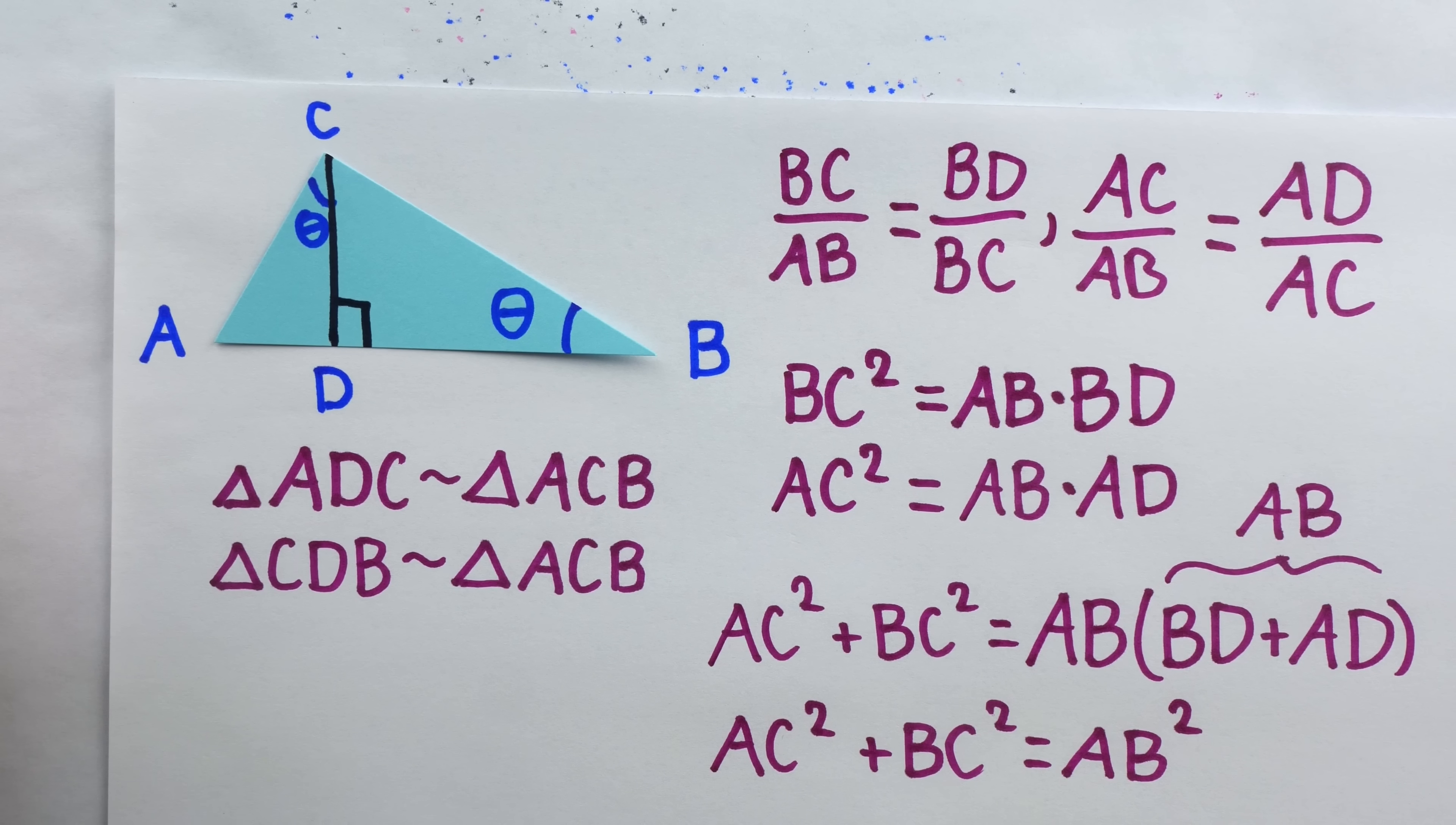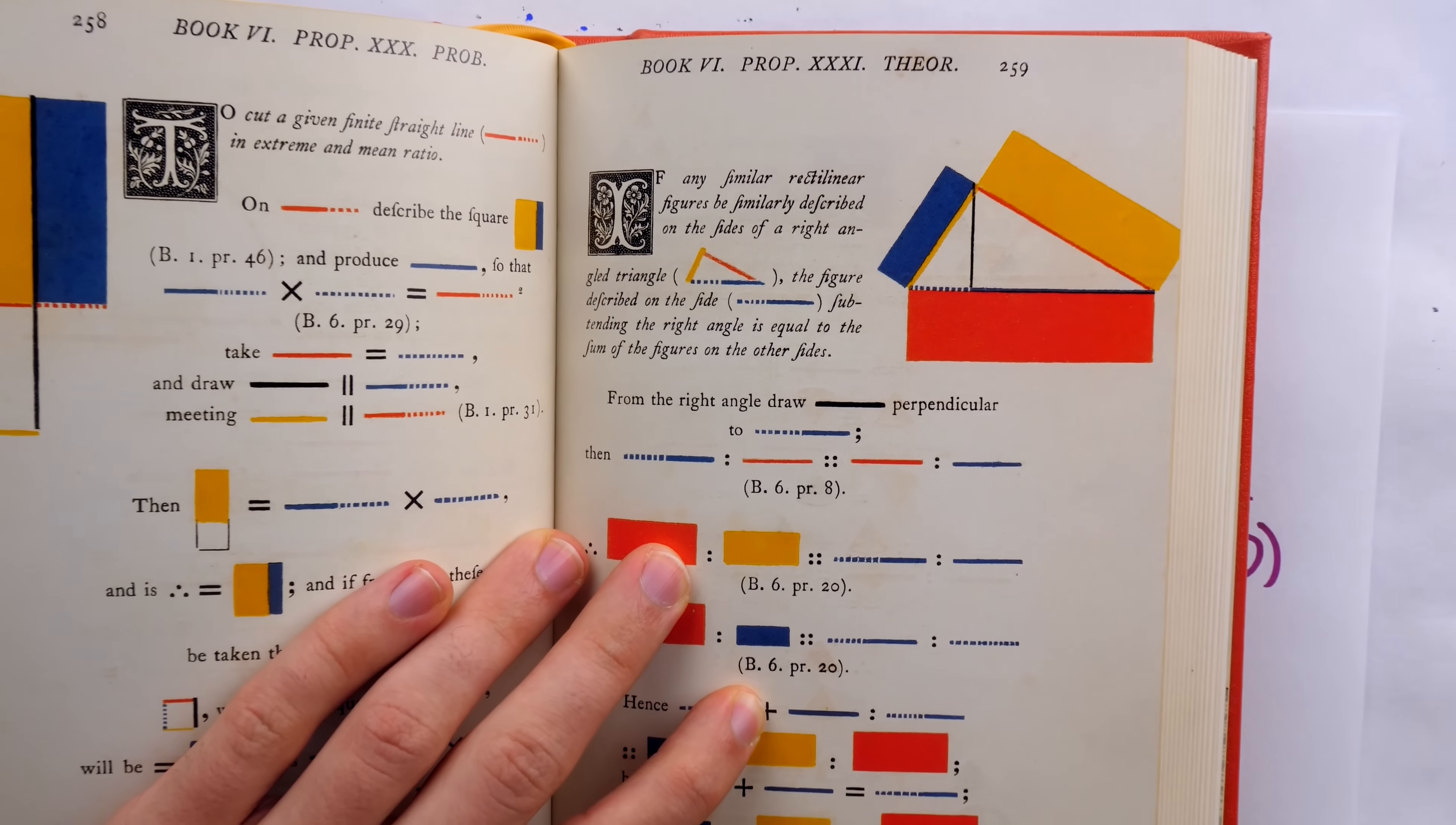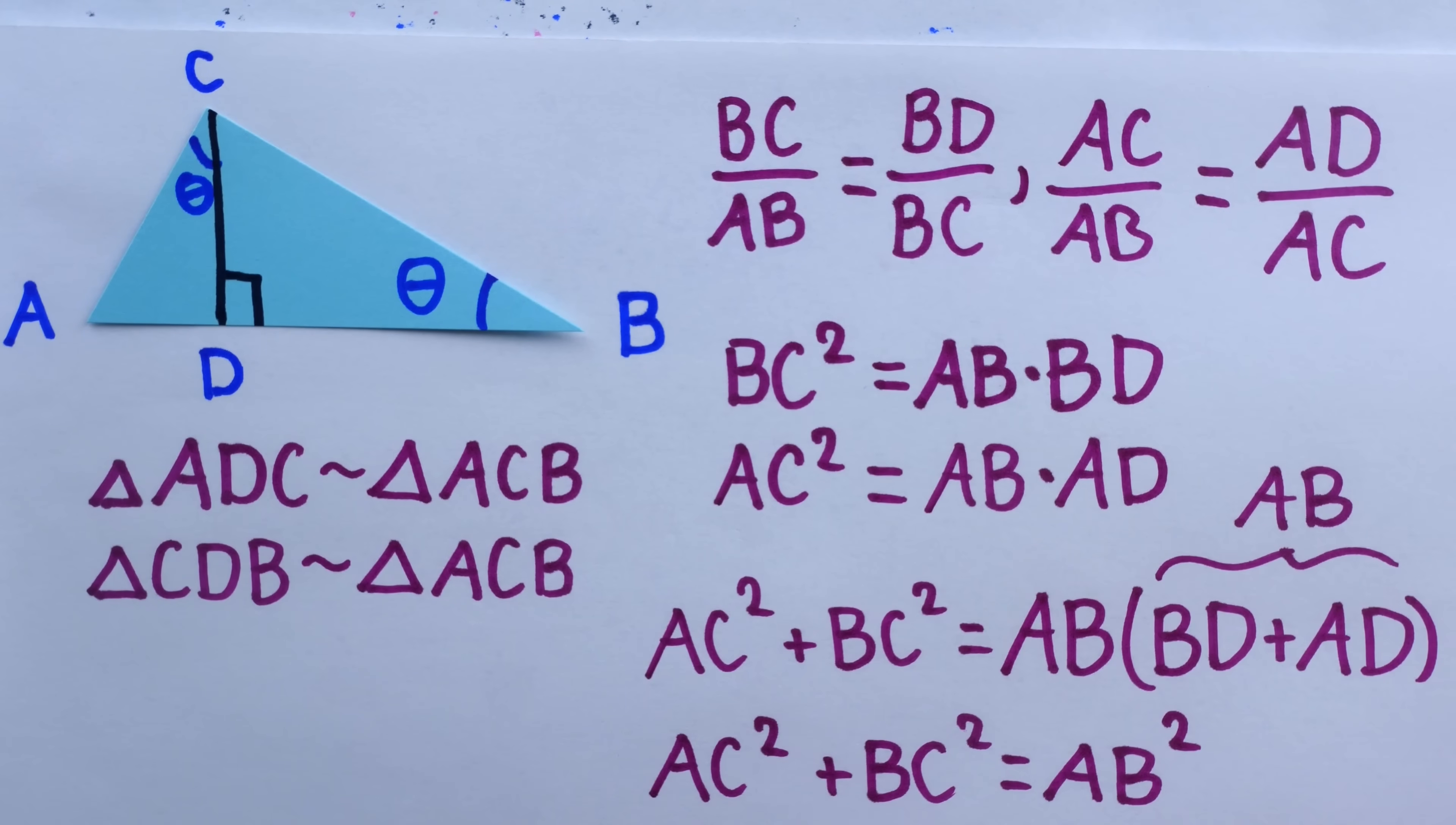Anyhow, seeing how simple this proof is, why did Euclid opt for the much more complicated construction with the rectangles? Why didn't he use this proof? Well, the interesting thing is that he did use this proof. However, it doesn't show up until Proposition 31 of Book 6. And in this proof, he's actually using our strategy to prove not the Pythagorean theorem, but a somewhat generalized version of it.